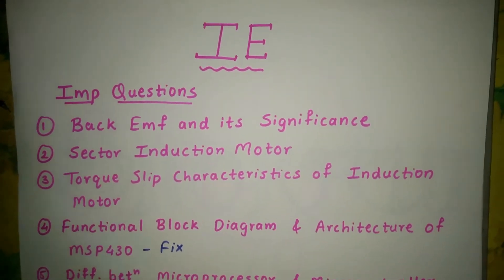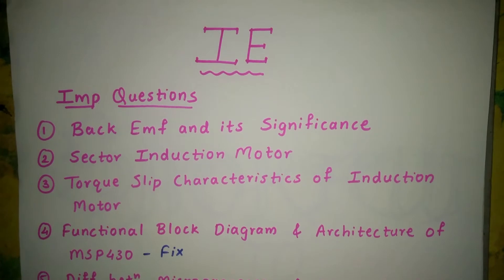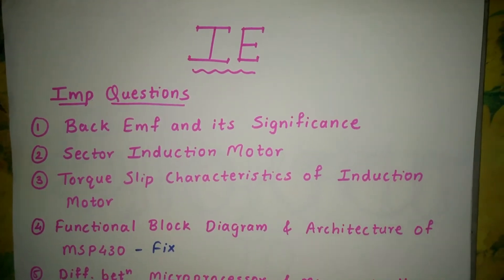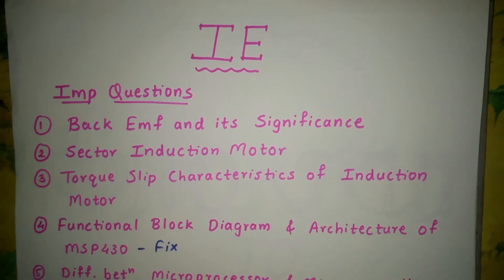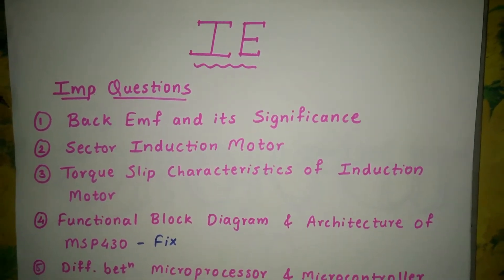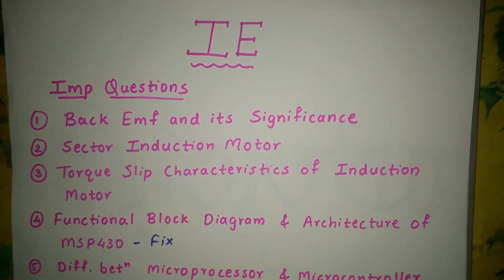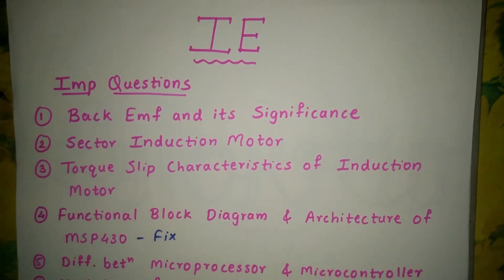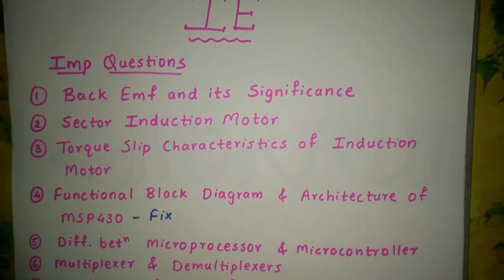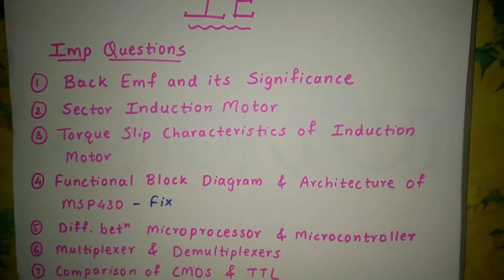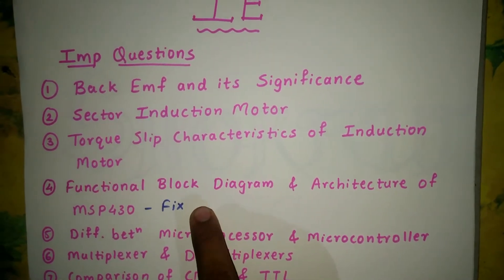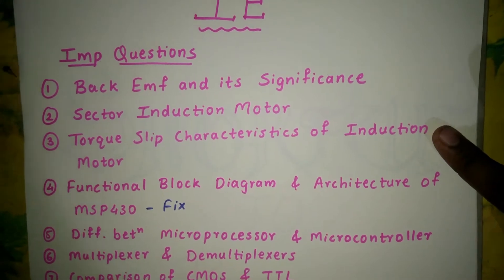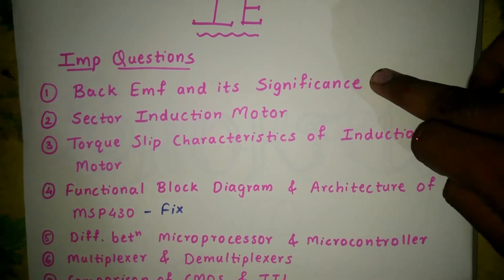The questions are: back EMF and its significance, induction motor torque-slip characteristics, and the functional block diagram and architecture of the MHP 430. This is a fixed question that is asked many times in the exam.